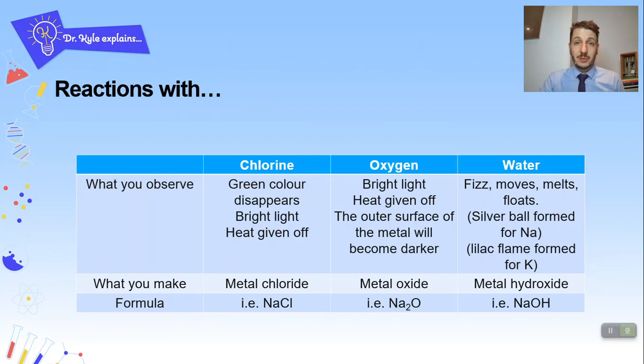So chlorine, as we know it's a green gas and so if you react a Group 1 metal with chlorine the green gas would disappear. A bright light would be given off and some heat would also be given off. You may also see a white solid form because of the Group 1 reacting with the chlorine gas. Now what you would make would be a metal chloride. So for example if you reacted potassium with chlorine you would make potassium chloride. In the example of the formula I've used sodium so you would make sodium chloride NaCl.